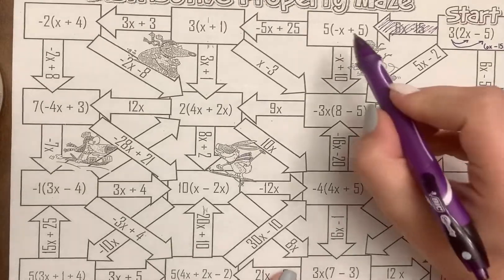Once I solve this problem, my goal is going to be to get down here to the finish line. Remember this negative here is the same as negative 1x. So you got to think 5 times negative 1 is going to be negative 5, plus 5 times 5.